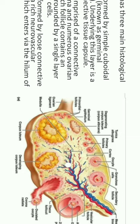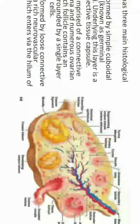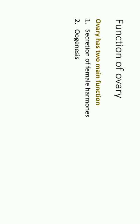After menarche, during each menstrual cycle, only one follicle matures and releases its ovum. During every menstrual cycle, only one ovum is released from either the left or right ovary — that means both ovaries do not ovulate at the same time; it occurs on alternate cycles. The function of ovaries is secretion of female hormones and oogenesis.